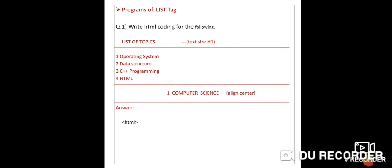See how to write the code. The first tag is always HTML, then body tag. Write the H1 heading: in angle brackets, H1, then write 'List of Topics', then close with /H1. Note: HTML is not case sensitive — you can write in capitals, lowercase, or mixed. Then add a horizontal line using the HR tag.